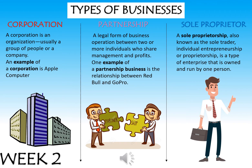A partnership, shown in the middle in pink, is a legal form of business operation between two or more individuals who share management and profits. One example is the partnership between Red Bull and GoPro. Red Bull is an energy drink and GoPro is the little camera adventurers use, and they work together and have adverts together. The last type is a sole proprietor, also known as a sole trader — it is a type of enterprise owned and run by one person. A sole proprietor is someone who owns a business by themselves.